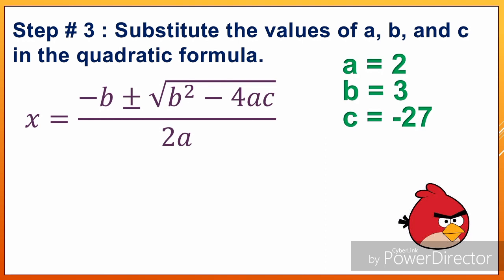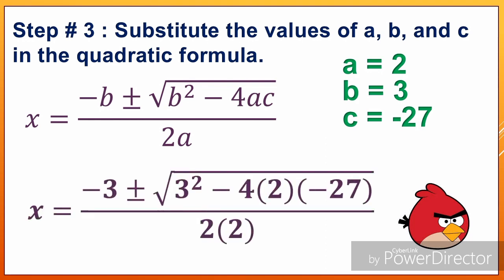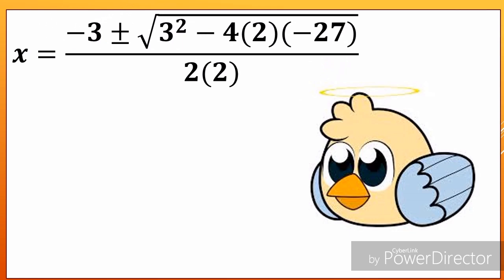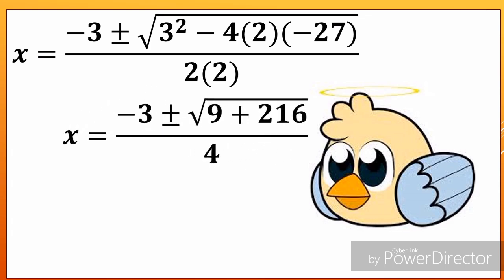This is the formula. Substituting the values: negative B — B is 3, so we have negative 3 — plus or minus, and B squared means 3 squared, minus 4 times A (which is 2) times C (which is negative 27), all over 2 times 2. So we have x equals negative 3, plus or minus the square root of 3 squared minus 4 times 2 times negative 27, all over 4.